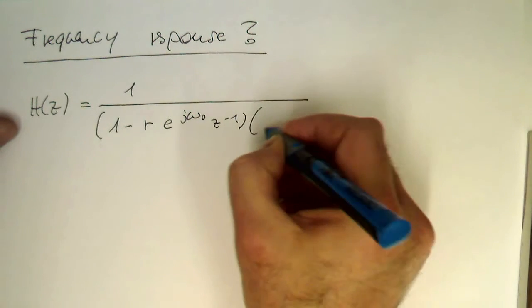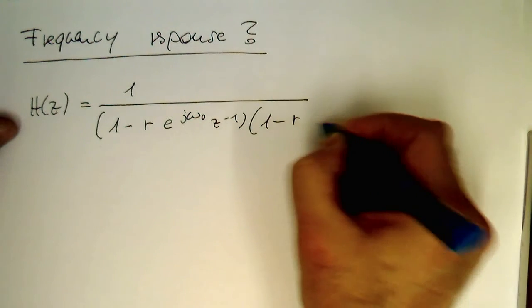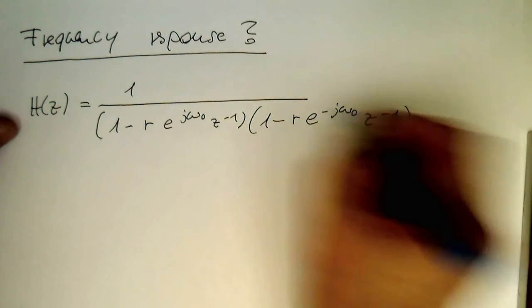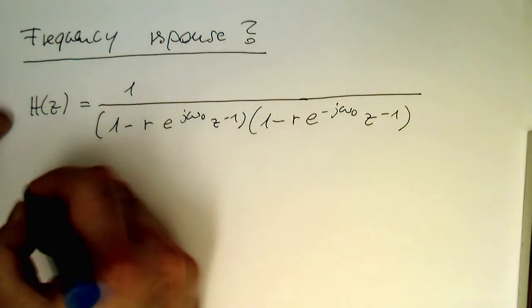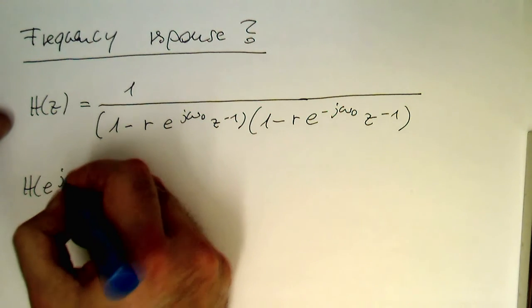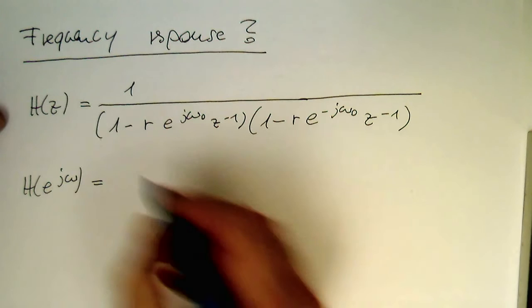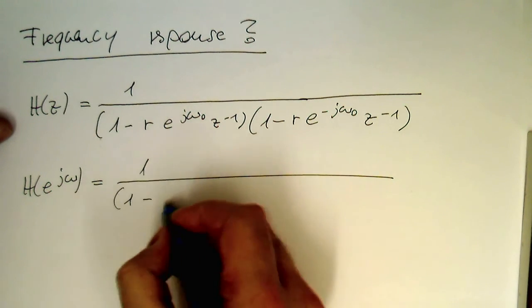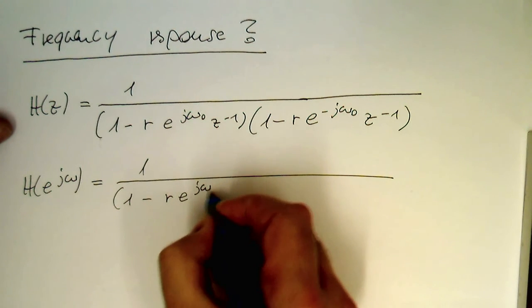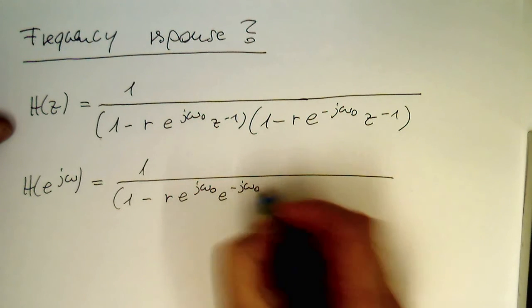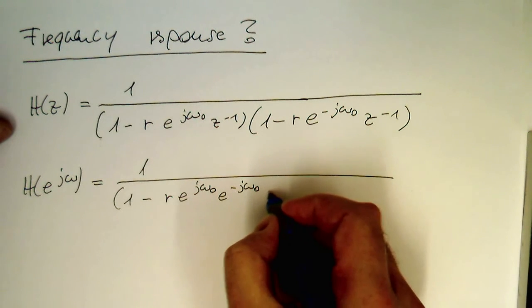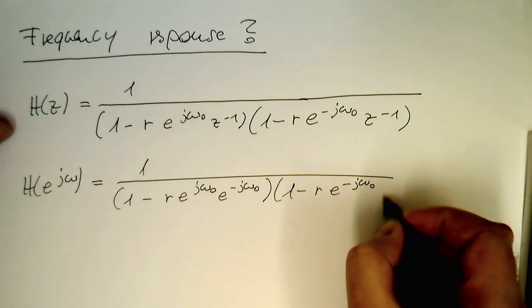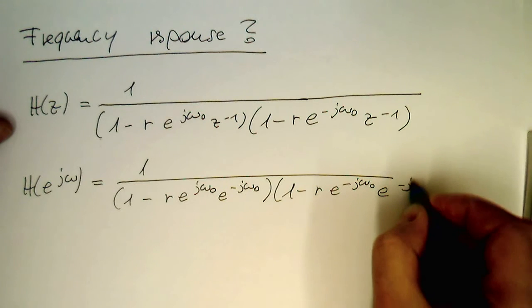Again we just go back to our original function here, and we directly see what this filter does. So 1 minus r e to j omega 0, and then z to minus 1, and we multiply this as 1 minus r to e to minus j omega 0, z to minus 1. Again we need to write e to j omega 0, and then this is e to minus j omega 0, and then this is here 1 minus r e to minus j omega 0, and then this is e to minus j omega 0.